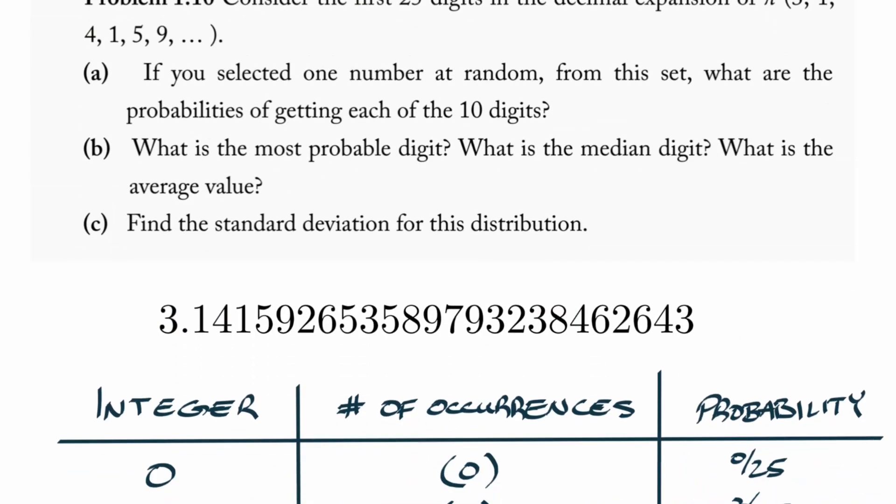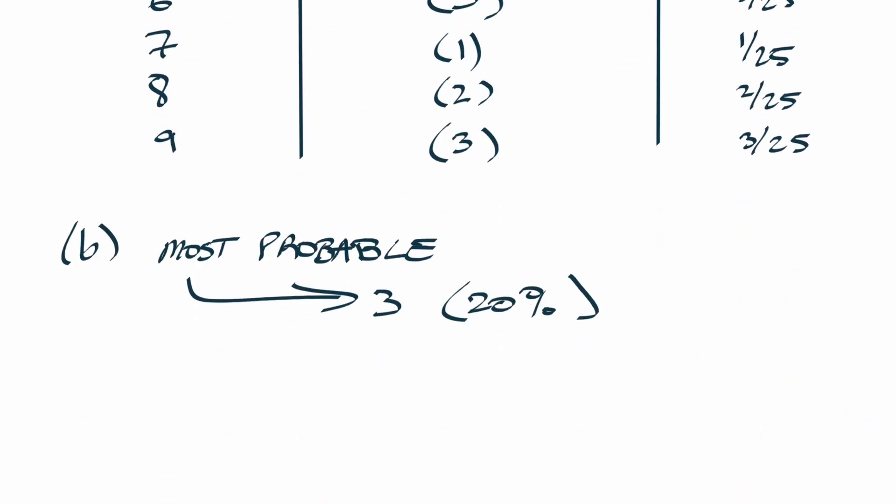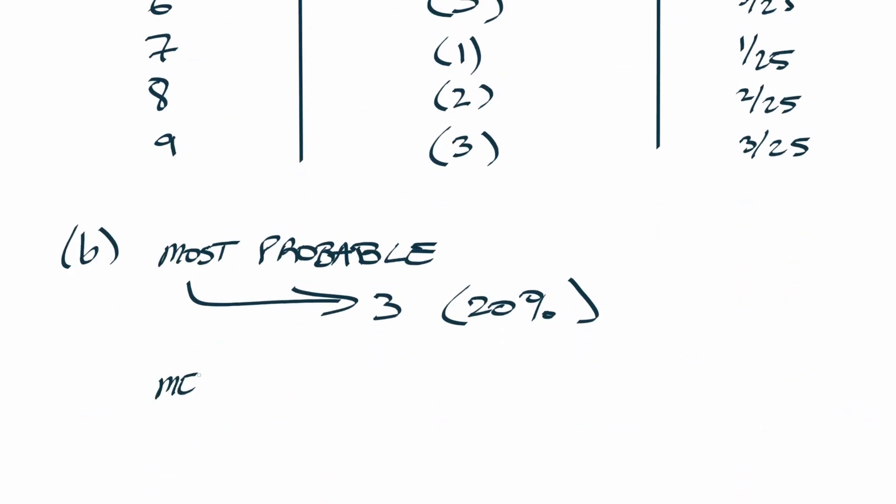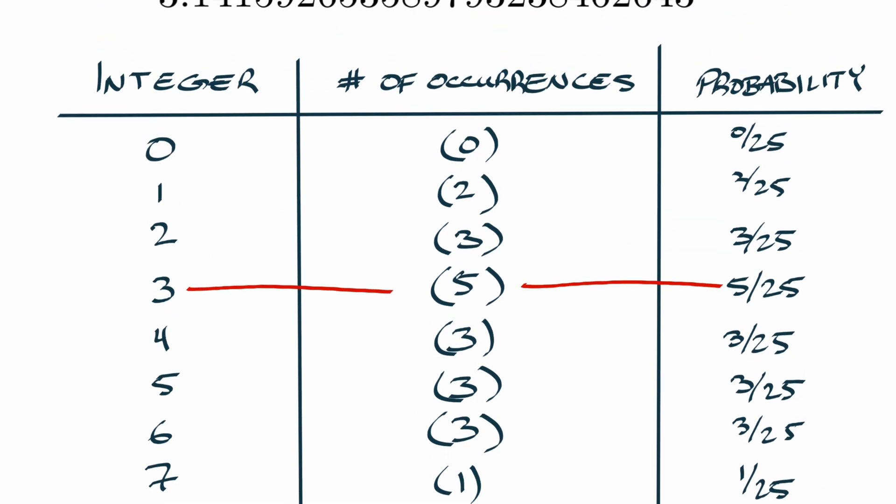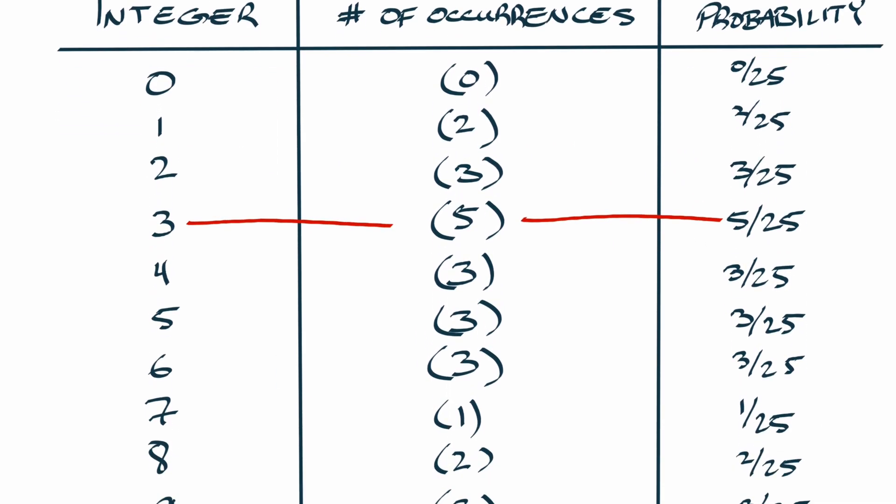And then what's the median digit? The median digit is going to take slightly more effort than the most probable one. What we have to do is figure out, okay there's 25 digits, and we have to determine what is the 13th occurrence if we go from this way to this way.